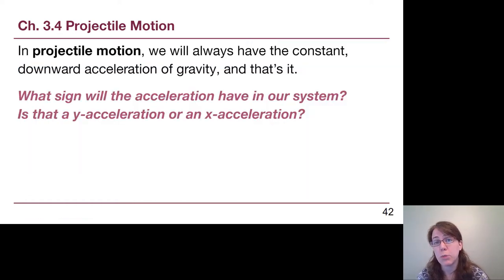In projectile motion problems, we will always have the constant downward acceleration of gravity, and that is the only acceleration that we'll have in the problem. There is no air resistance acting in our Physics 125 problems. There is no speeding up or slowing down in the sideways direction once we have stopped touching the object. For gravity, how were we using gravity in Chapter 2? What sign did it have, plus or minus? And was that in the y direction or the x direction?